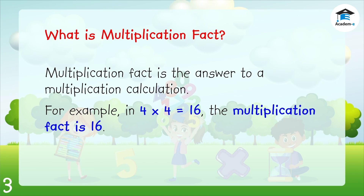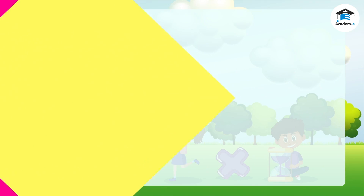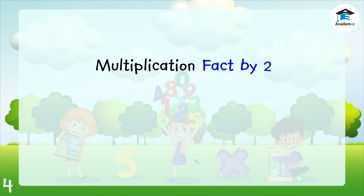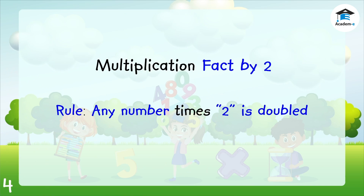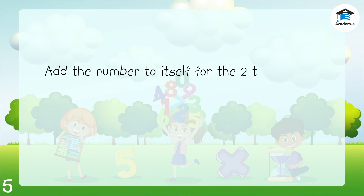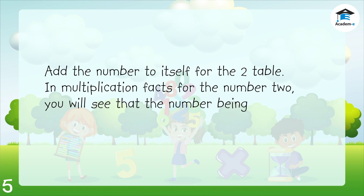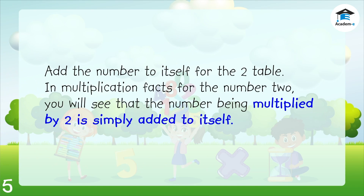Mastering the table facts will make multiplication easier. We start by studying the multiplication fact by 2. The rule is: any number times 2 is doubled — add the number to itself. For the 2 table, you will see that the number being multiplied by 2 is simply added to itself.